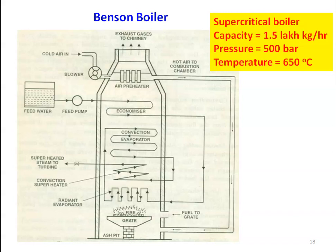This is also called a supercritical boiler. When the pressure of the steam is higher than 221 bar, it is called a supercritical boiler. Normally for very high capacity steam generation, we use the Benson boiler or supercritical boiler. The pressure is around 500 bar, the temperature is 650 degrees Celsius, and the capacity of the Benson boiler is 1.5 lakh kilograms of steam per hour. This is the Benson boiler — a once-through, supercritical boiler.